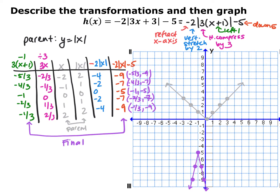The final function points work out with coordinates like (−5/3, −9), (−4/3, −7), (−1, −5), (−2/3, −7), and (−1/3, −9). The key things when graphing with transformations: recognize the parent function, factor out anything multiplied by x first, and always follow order of operations — multiplication or division before any adding or subtracting.